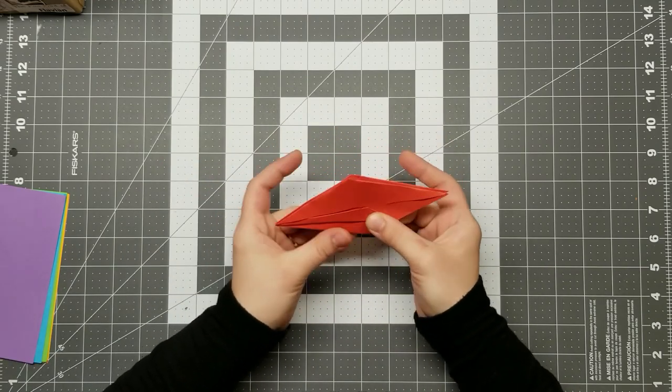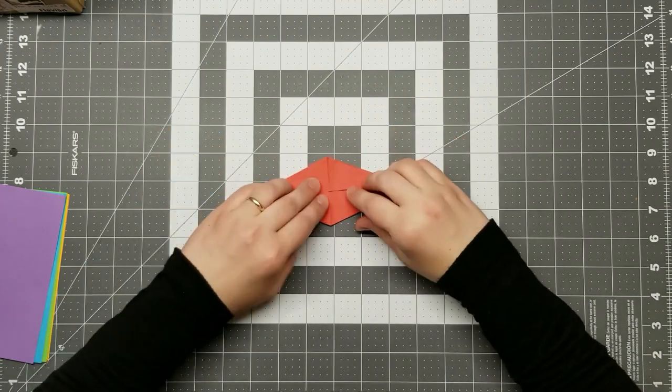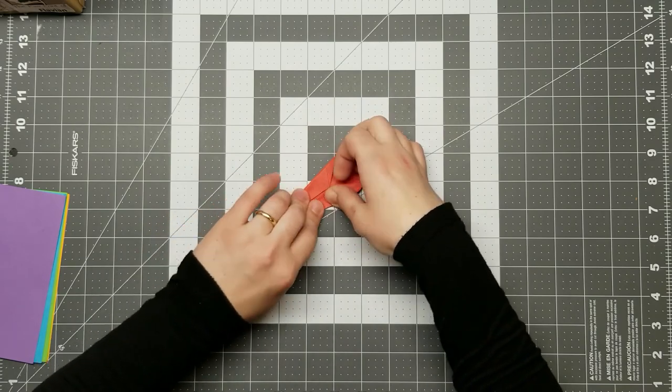Today, the crane is one of the most globally recognizable of the traditional origami models and a Japanese cultural icon. In fact, the crane is what drew me to origami in the first place.